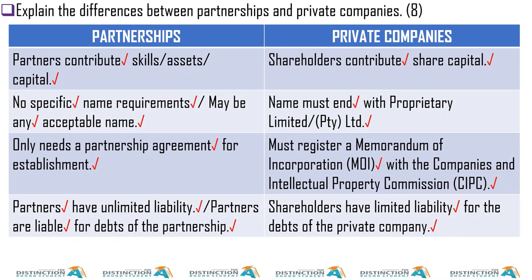Explain the difference between partnerships and private companies. One difference: owners are called partners in a partnership and shareholders in a private company. Partners contribute skills, assets, and capital. Shareholders contribute share capital.